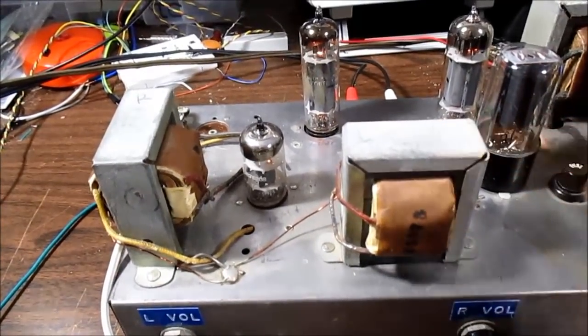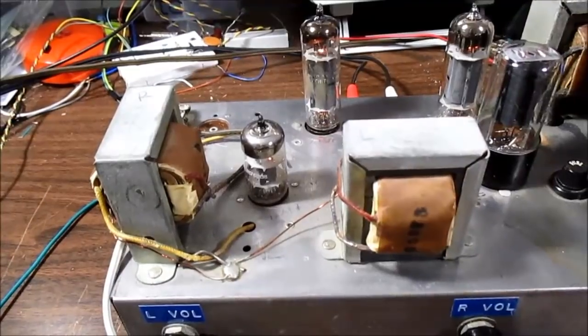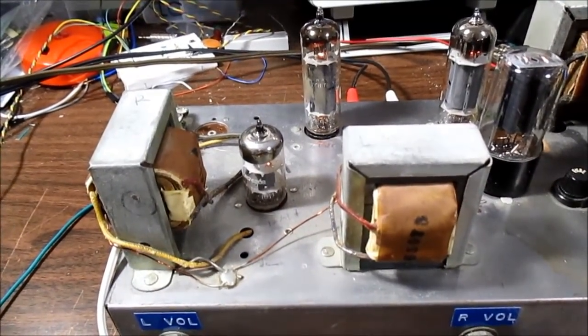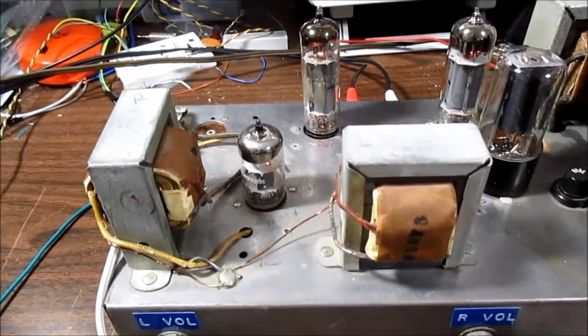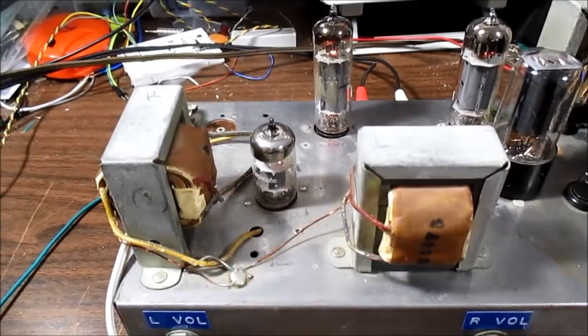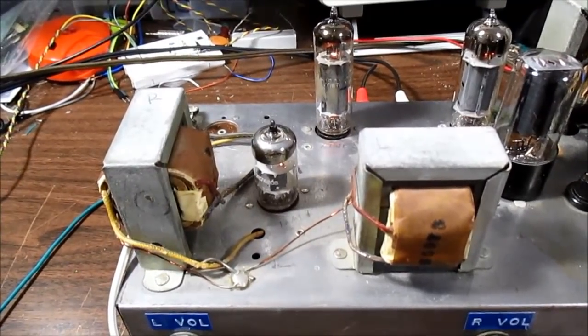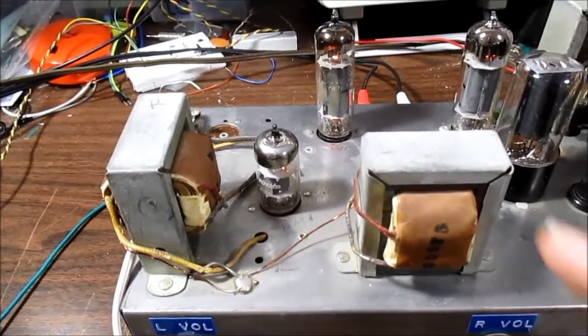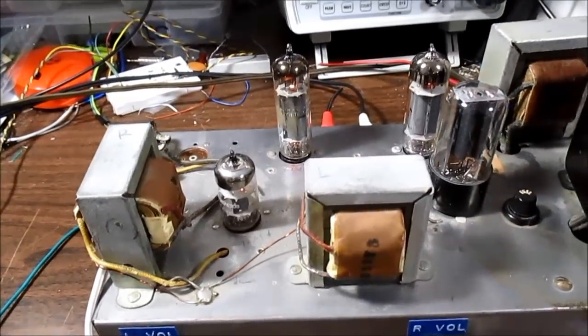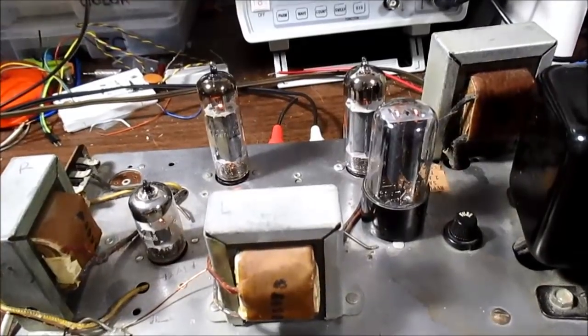These output transformers don't have tapped secondaries, so it's really meant to be used with a single load impedance. So I tried 4 ohms and 16 ohm loads. With 4 ohm loads, I got 1.4 watts of output. And about the same with 16 ohm loads. So that tells me with the 8 ohm loads, I was getting 2.1 watts. So this amplifier was meant to be used with 8 ohm loads.